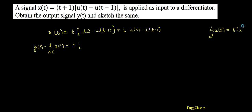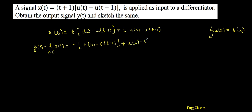We know the standard result: d/dt of u(t) is the unit impulse δ(t). Using that, I get δ(t) minus d/dt of u(t - 1), which is δ(t - 1). Then plus, keeping the second function [u(t) - u(t - 1)] as it is, multiplied by d/dt of t, which is 1.